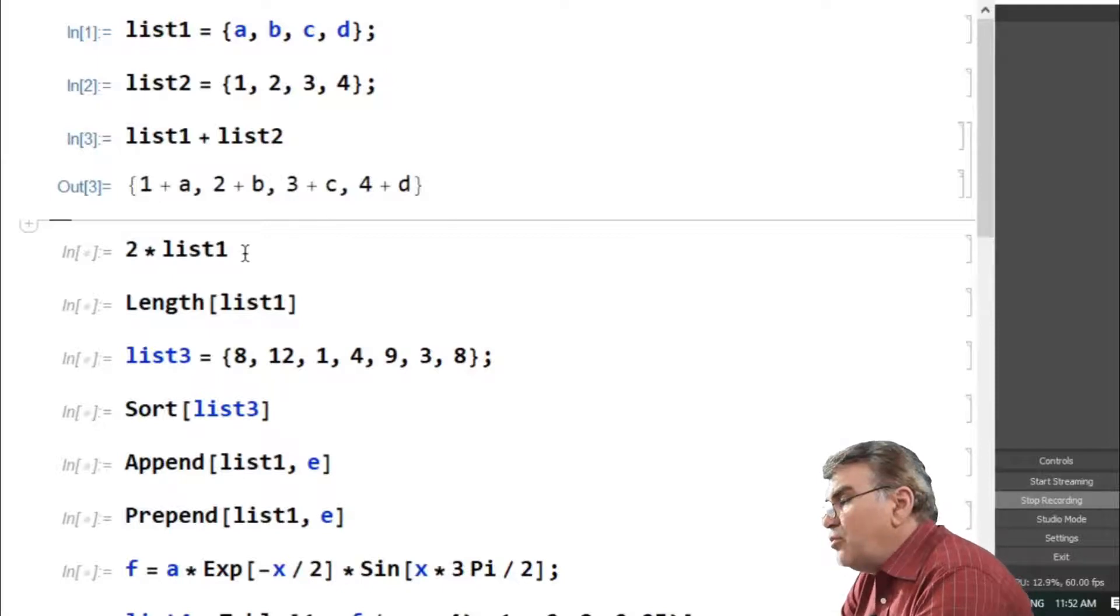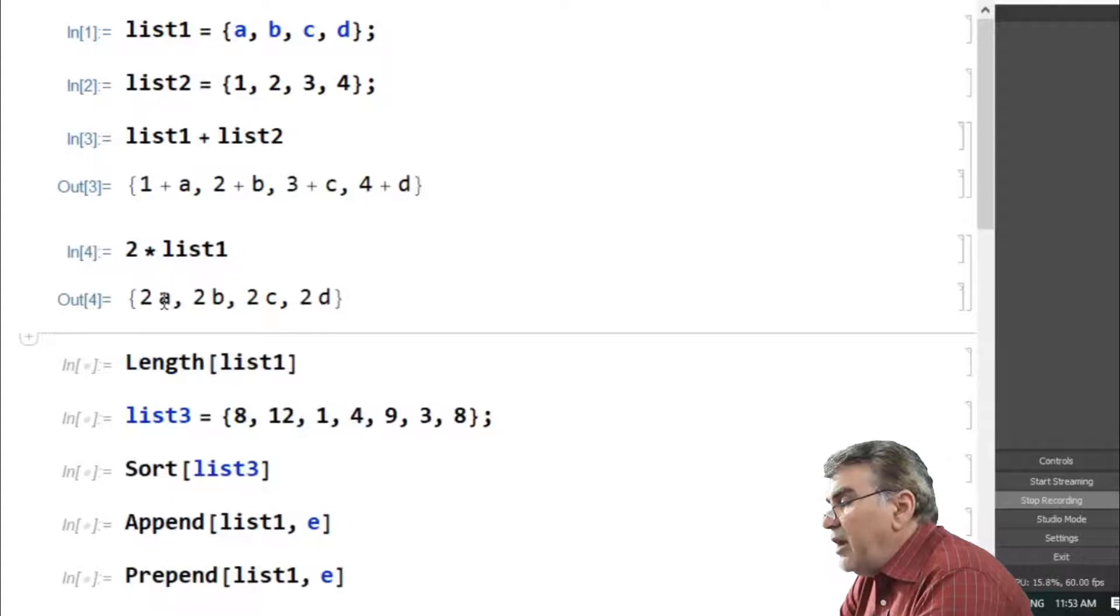If I want to multiply each member of a list with a number or an alphabet, I just multiply that number with the name of the list. If I run this out, then every element of this one will be multiplied with 2, and you see that has been done over here.